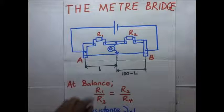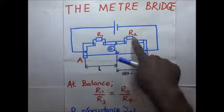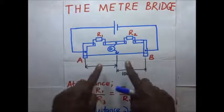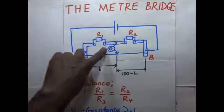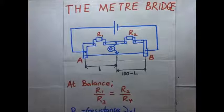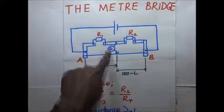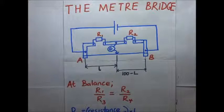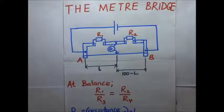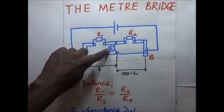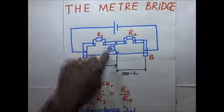A meter bridge has two resistances — we have the left hand gap and the right hand gap. Resistances R1 and R2 occupy those gaps. Then we have a galvanometer and the sliding jockey. The sliding jockey is placed at different positions along the slide wire A to B until the galvanometer gives no deflection, or indicates zero deflection.